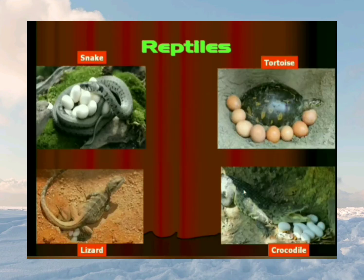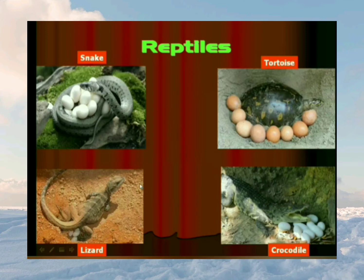Now let's learn about reptile reproduction. Reptiles are animals that crawl or move on their belly or on their small legs. Examples of reptiles are snake, tortoise, lizard, and crocodile. These reptiles lay eggs on the ground.